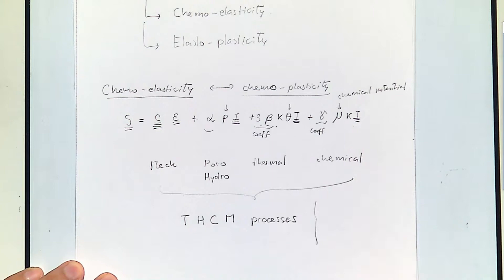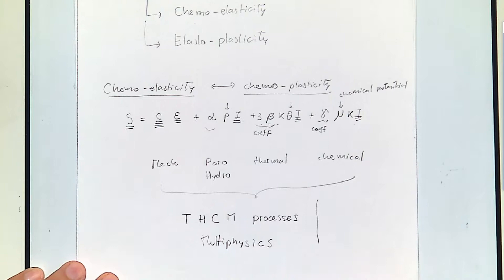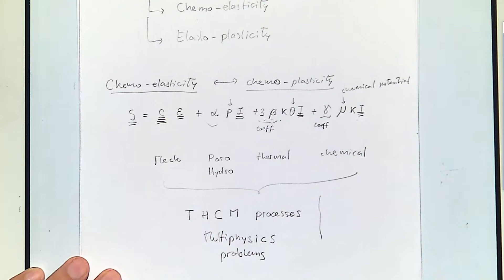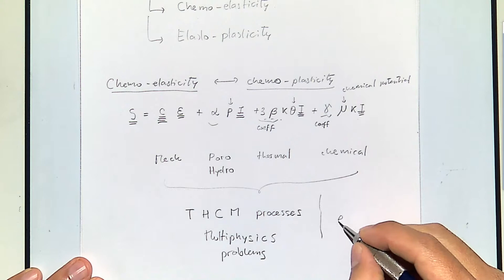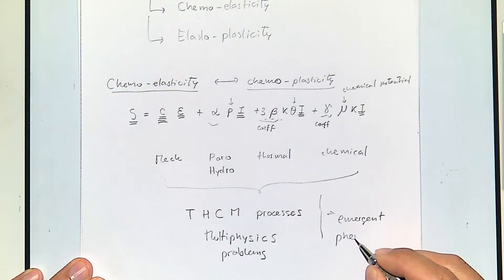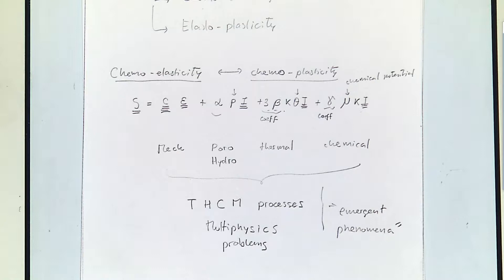When you combine some of these processes together, you may have processes that you didn't see before that could be very important. Sometimes this is called multi-physics or multi-physical processes. When you have combinations that produce behavior not seen by applying any one process independently, that's called emergent phenomena.